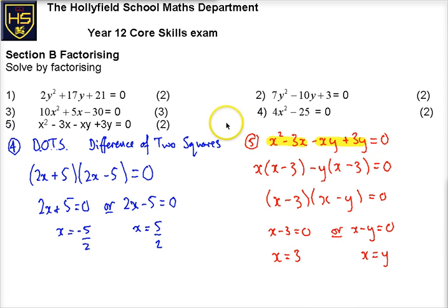So go back and look at the part one video if you need to for the standard way of factorising and solving. And then there's slightly two special cases. The question four was a difference of two squares, and question five was a kind of like staggered factorisation method, kind of like factorising in two steps to get into double brackets.